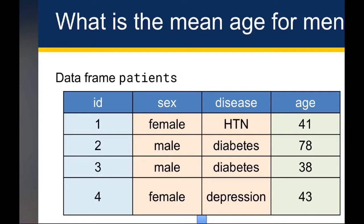Up until now we've been working with individual operations, which is straightforward but doesn't really help us answer useful questions. The mean age of the data set we could have gotten just using the summary function or the mean function the way we learned in week one. Where things start to get interesting is when you compute summaries or use the summarize or mutate function in ways where you're grouping based on certain variables.